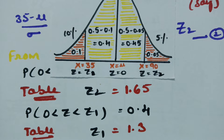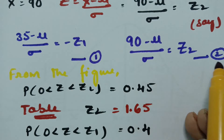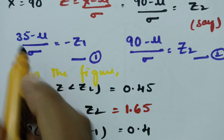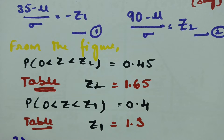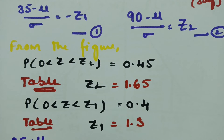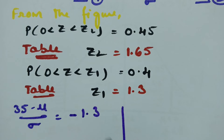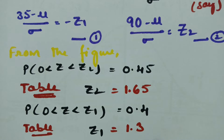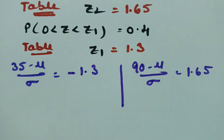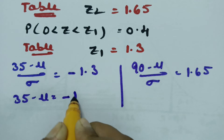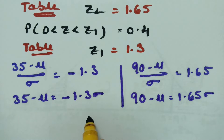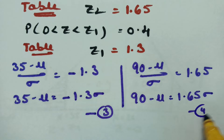After getting the z1 and z2 values, I will substitute in equations 1 and 2. From equation 1: 35 minus mu by sigma equals minus z1, which is minus 1.3. From equation 2: 90 minus mu by sigma equals z2, which is 1.65. Cross multiplying gives equation 3: 35 minus mu equals minus 1.3 sigma, and equation 4: 90 minus mu equals 1.65 sigma.